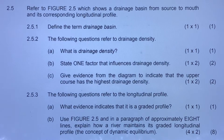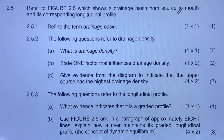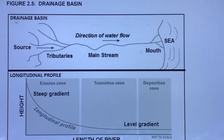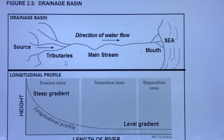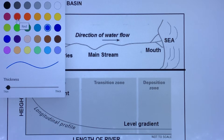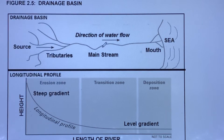Hello everyone. Today I want us to look at Figure 2.5, which shows a drainage basin from source to mouth and its corresponding longitudinal profile. This is Figure 2.5 illustrated in the form of a drainage basin. As you can see, the source is up there and the mainstream direction of flow is moving downwards until the sea.